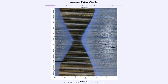That is apod.nasa.gov/apod, and today's picture for March 21st of 2022 is titled 'The Sky in 2021.' So what do we see here? This is an image of the sky as seen for the entire year.